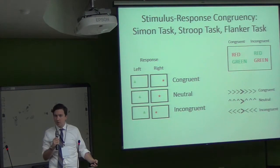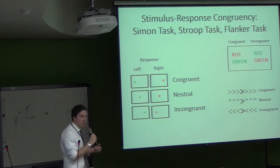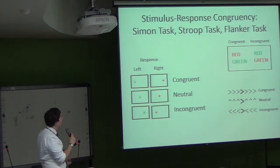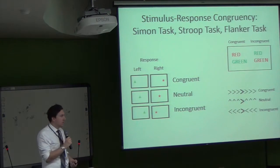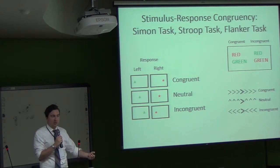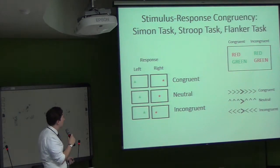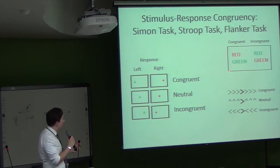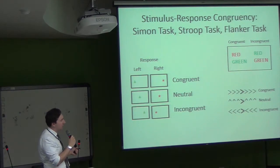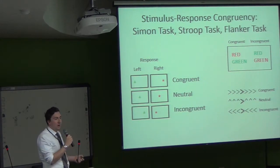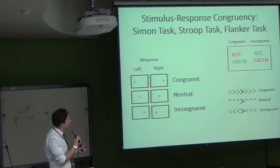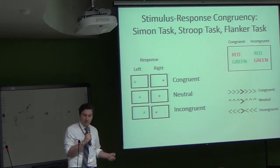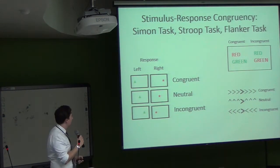Here's another type of situation where conflict has been studied in the literature: three tasks involving stimulus-response congruency — the extent to which the response you have to make is congruent with the information in the stimulus. One famous example is the Stroop task, where you name the color of the word but ignore the word itself. Saying the color 'red' when it's printed in red is much faster than responding 'green' when the word 'red' is printed in green.